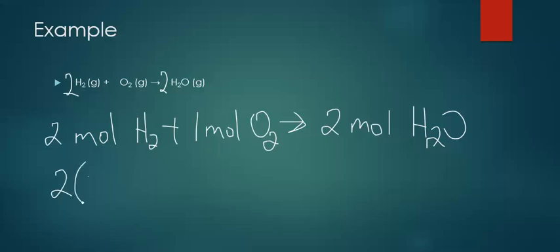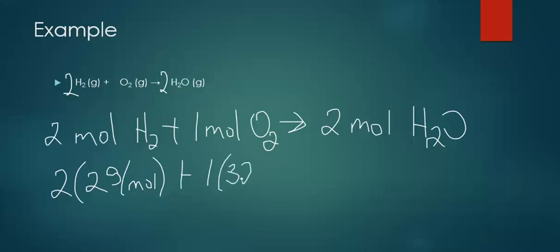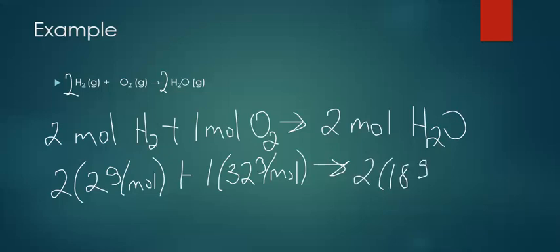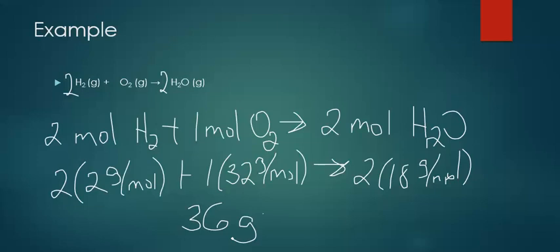H₂ has a mass of two grams per mole. We add one mole of oxygen, which is 32 grams per mole because it's O₂. Then we form two moles of water, with a mass of 18 grams per mole. Adding the numbers up: 2 × 2 = 4, plus 32 gives 36 grams on the left side. On the right side, 2 × 18 = 36 grams. So in every chemical reaction, mass is conserved.